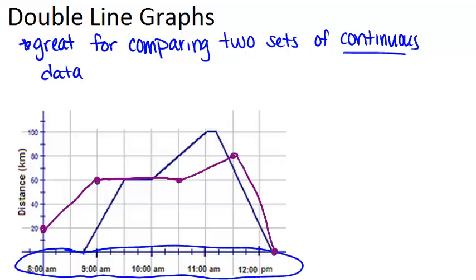We can see really easily that for the first portion from 8 to 9:30, that the purple line, whoever was the purple line, was farther away than whoever the blue line was.